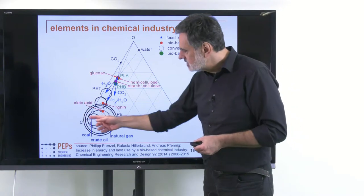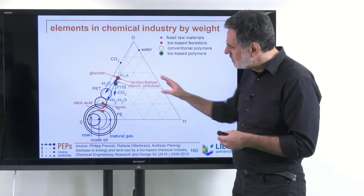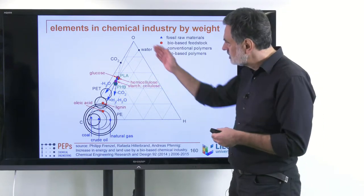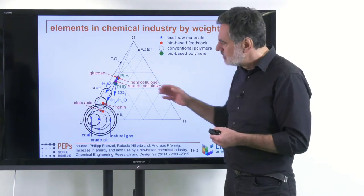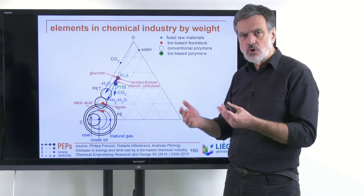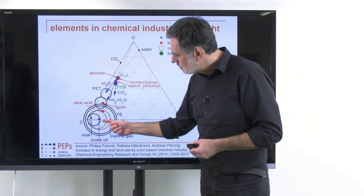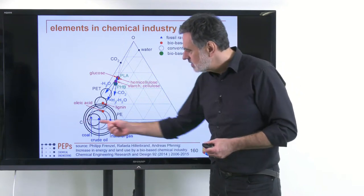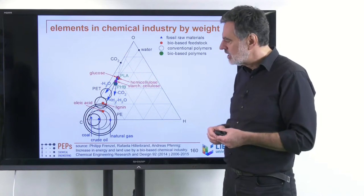In this ternary diagram, each point indicates how much carbon, hydrogen, and oxygen is contained in the corresponding molecule — the closer to a corner, the more of that component. We see that coal, crude oil, and natural gas are more or less on the horizontal line containing only carbon and hydrogen, essentially hardly any oxygen.